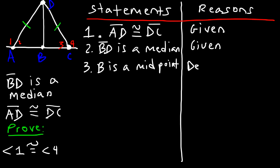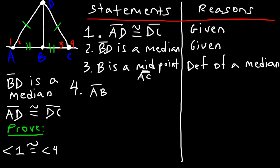That's based on the definition of a median. Now let's move on to number four. If B is a midpoint of AC, that means AB is congruent to BC. So AB and BC are the same in value, and the reason for that is the definition of a midpoint.